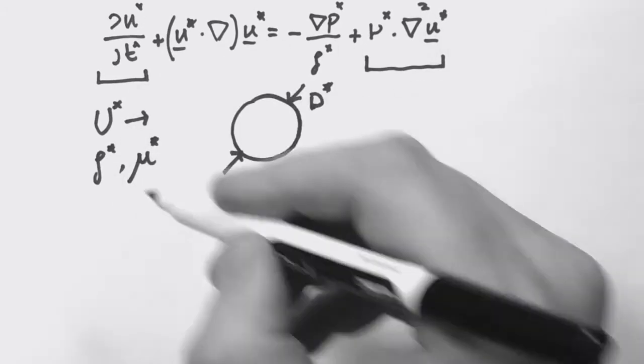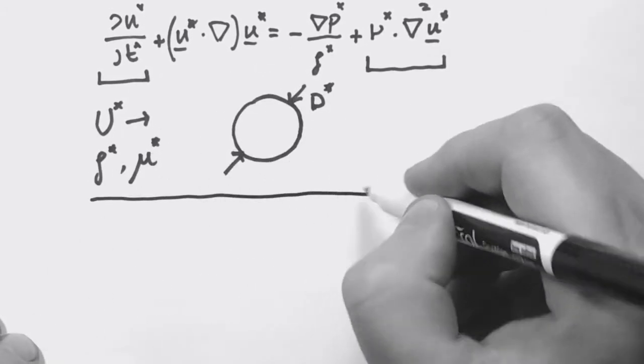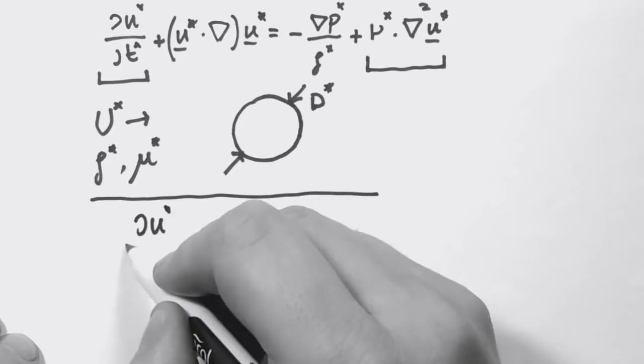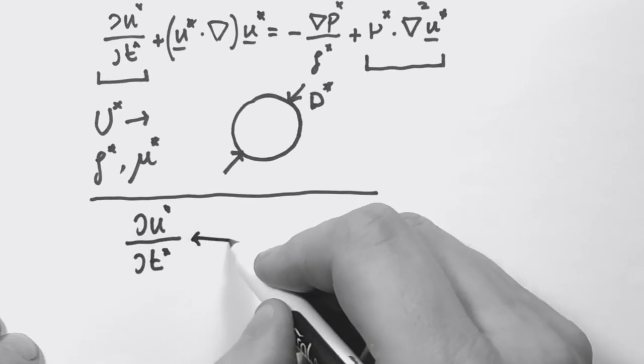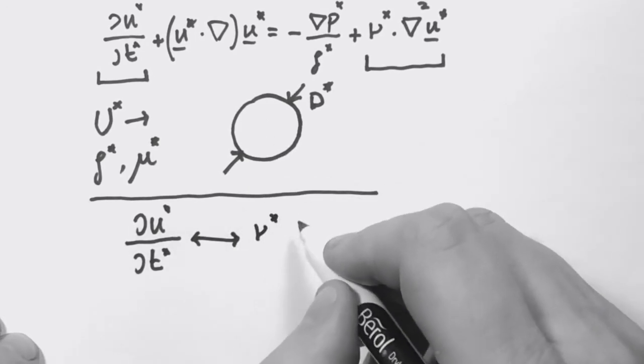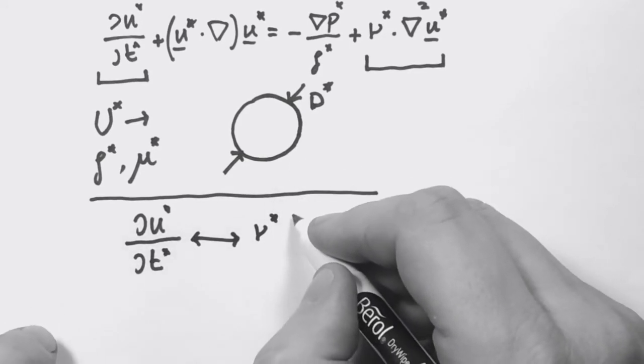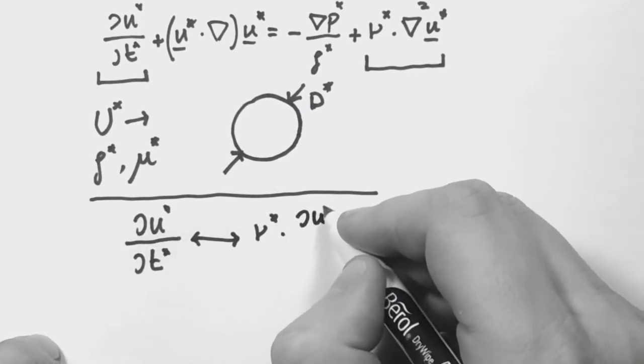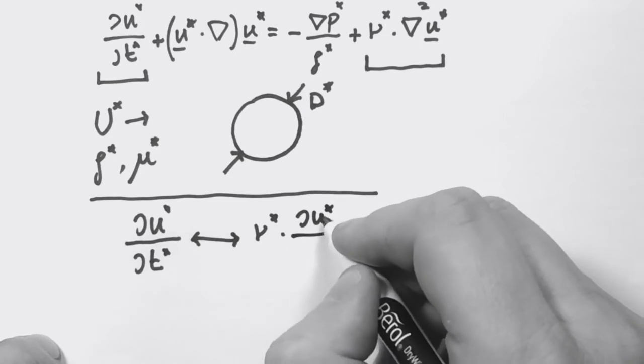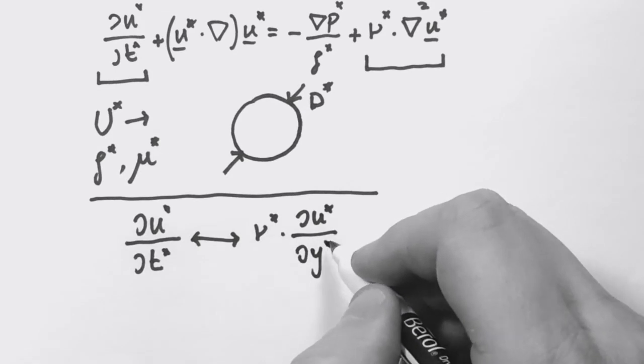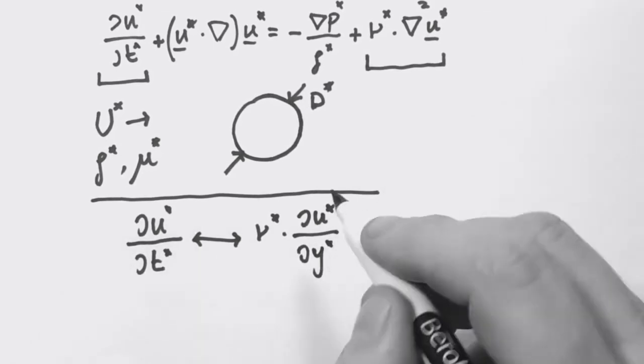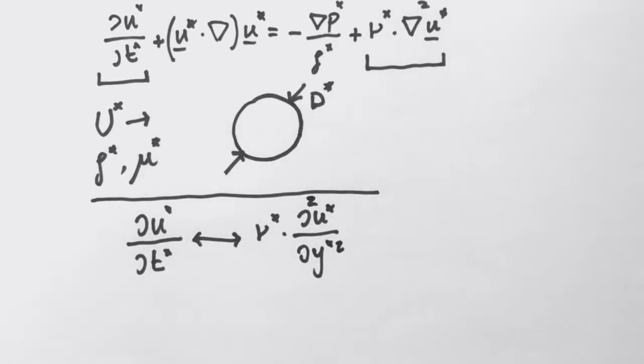We can just look at these two terms, so we have a balance between the acceleration in Eulerian sense and the viscous term. We can just take one viscous term, for example if you are in Cartesian coordinates we can take the ∂u in the x direction ∂y in the wall-normal direction. So we have a second derivative and what we have to do now is write each of these variables in non-dimensional form.